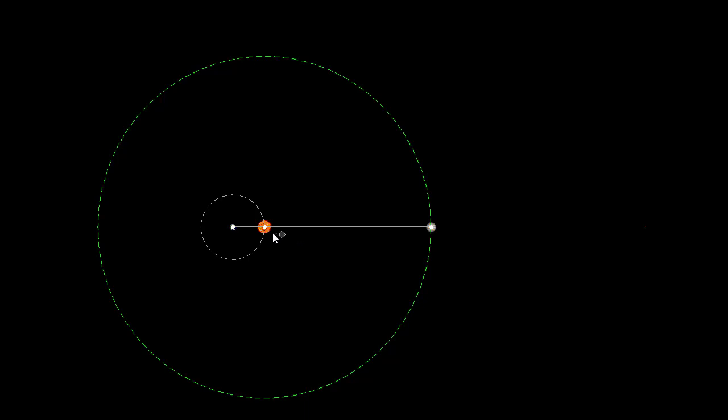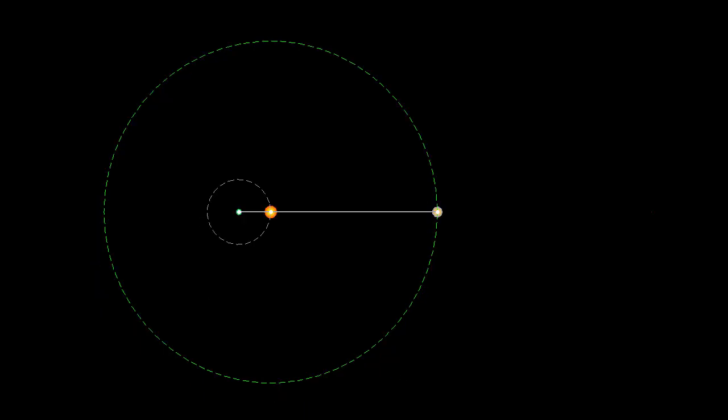But mind you, now in this system or in this observational frame of reference, we are going to see the Sun itself moving. So, even the orbit of Jupiter, we would see moving with it. So, let us start the motion.